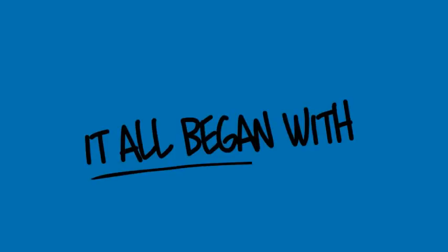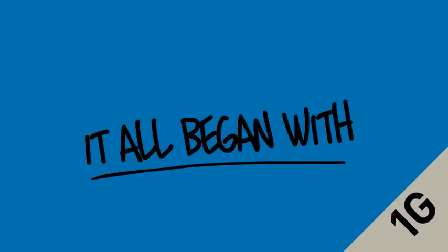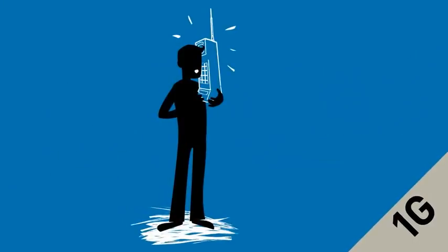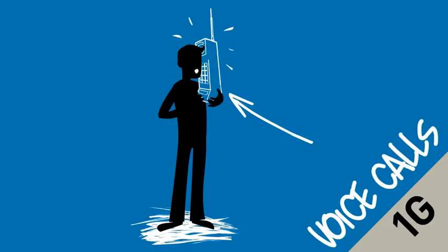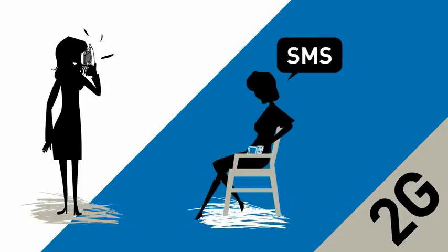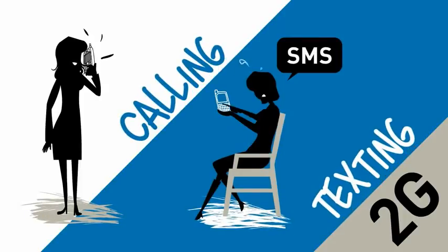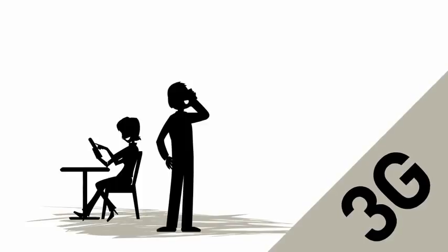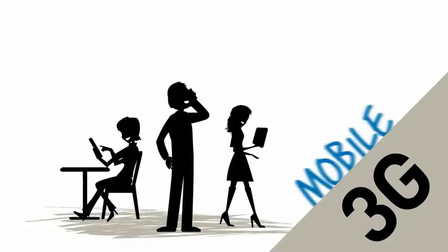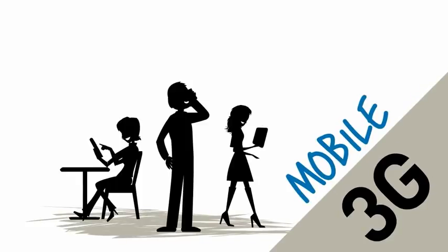It all began with 1G — bulky analog mobile phones that only allowed voice calls. Then came 2G, digital mobile communication that combined calling and texting. And then came 3G, where the internet finally went mobile.